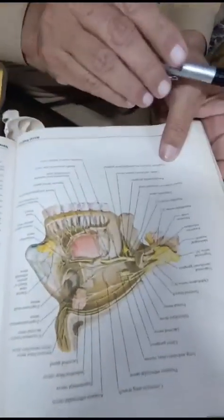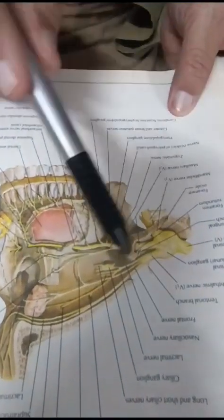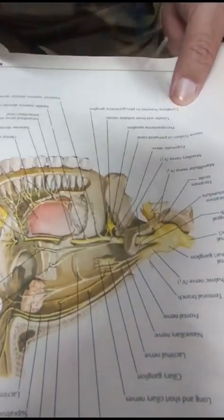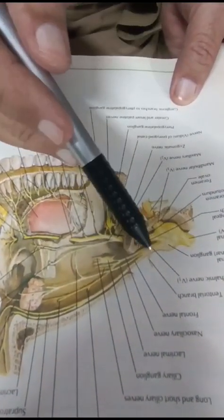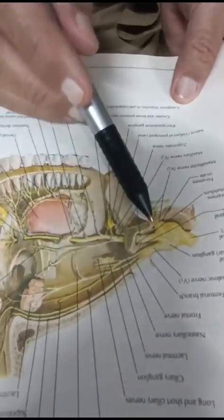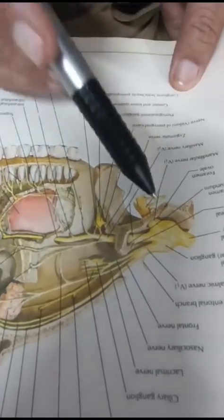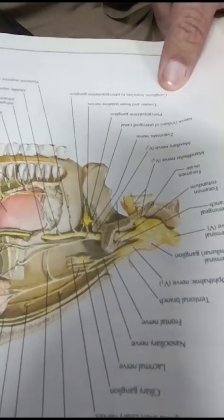This is the trigeminal ganglion which divides into three branches: that is the ophthalmic, the maxillary, and the mandibular branch.